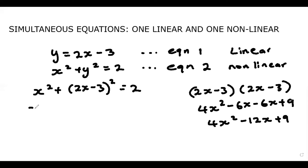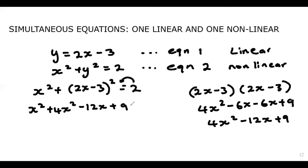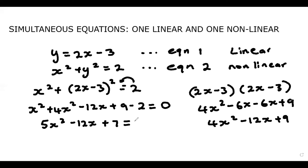So here we have x squared plus 4x squared minus 12x plus 9, and I'm going to carry this 2 over the equal sign so it becomes minus 2, equal to 0. So now we have 5x squared minus 12x plus 7 is equal to 0.